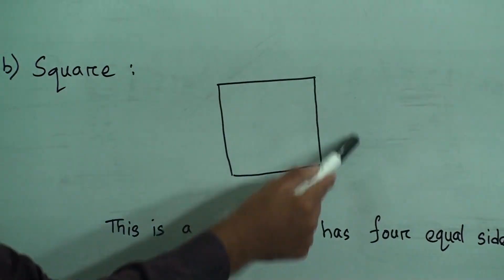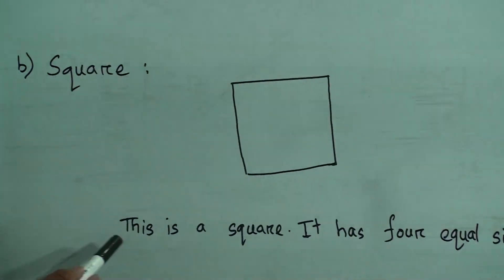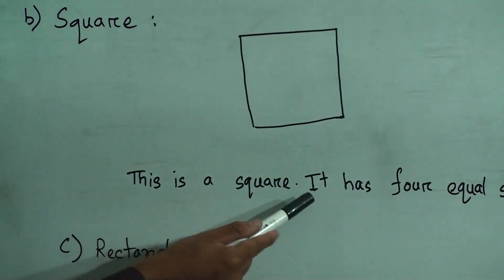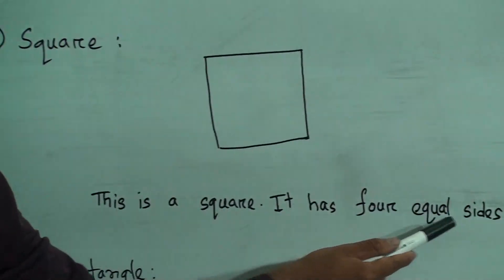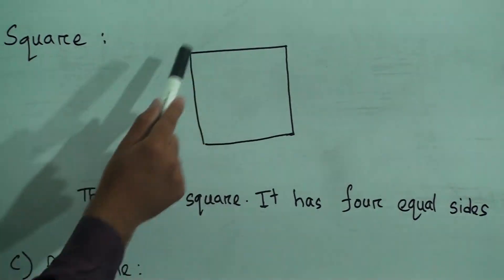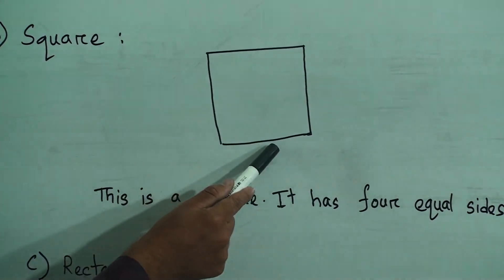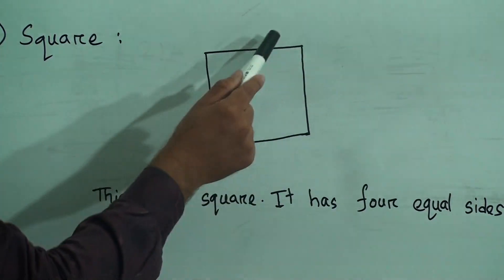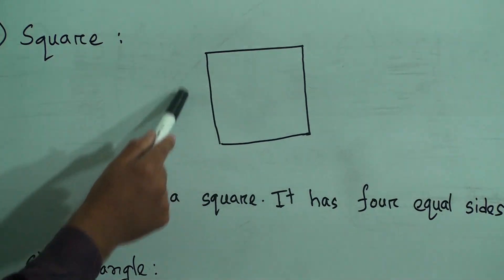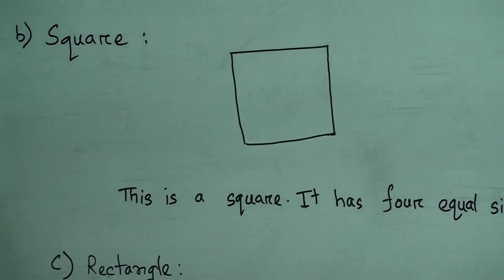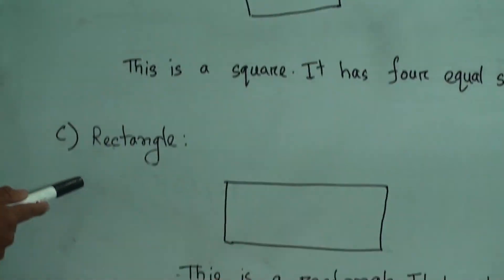Now the next one is square. Look, this shape is called a square. It has four equal sides — one, two, three, four. Four equal sides, that means all of them are equal.